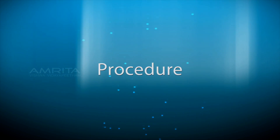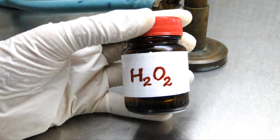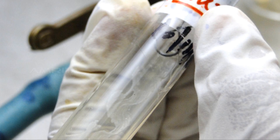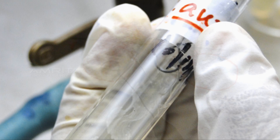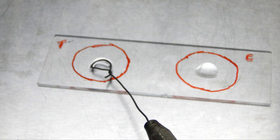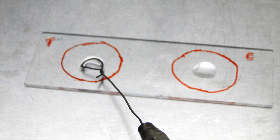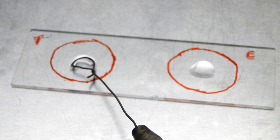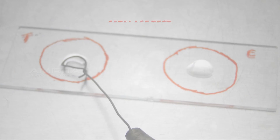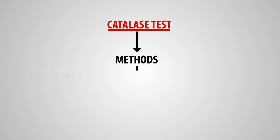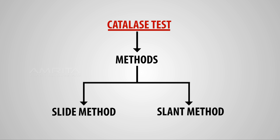Procedure. The hydrogen peroxide can be added directly to a slant culture or to bacteria smeared on a clean glass slide. Accordingly, there are two types of methods: slide method and slant method.